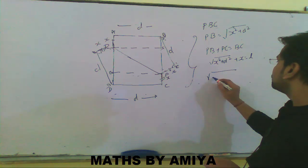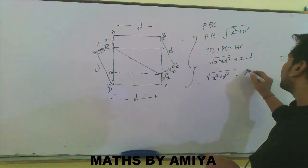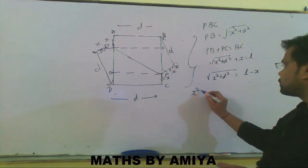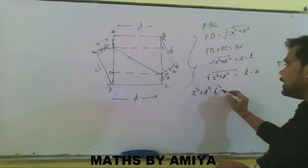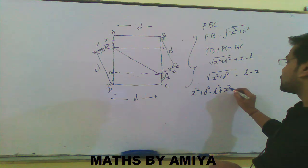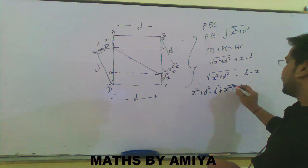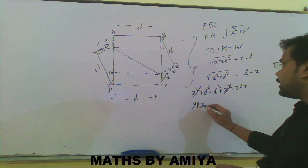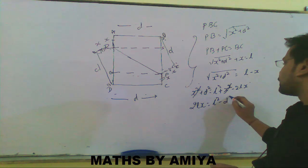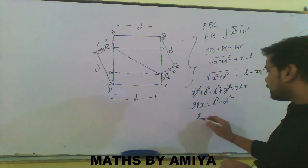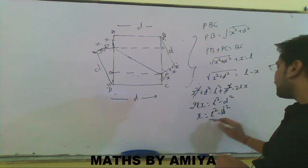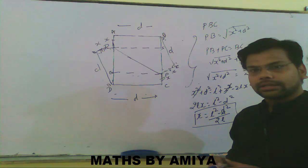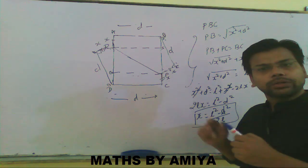We can say √(x² + d²) = l − x. Squaring both sides: x² + d² = l² − 2lx + x². The x² cancels out, so 2lx = l² − d², giving x = (l² − d²) / 2l. This is our value of x derived from Pythagoras, similarity, and congruency.